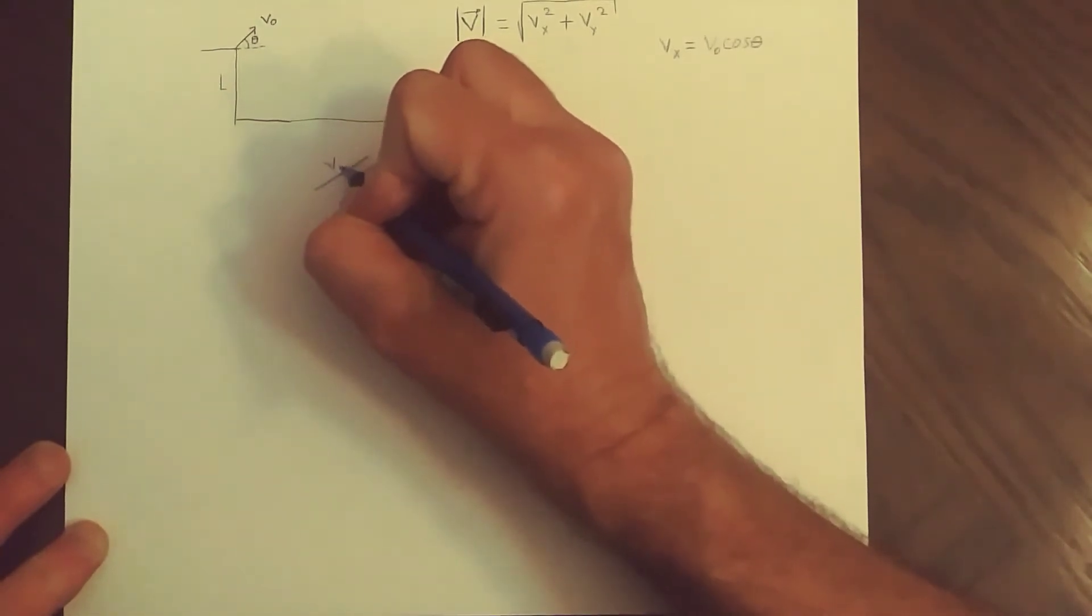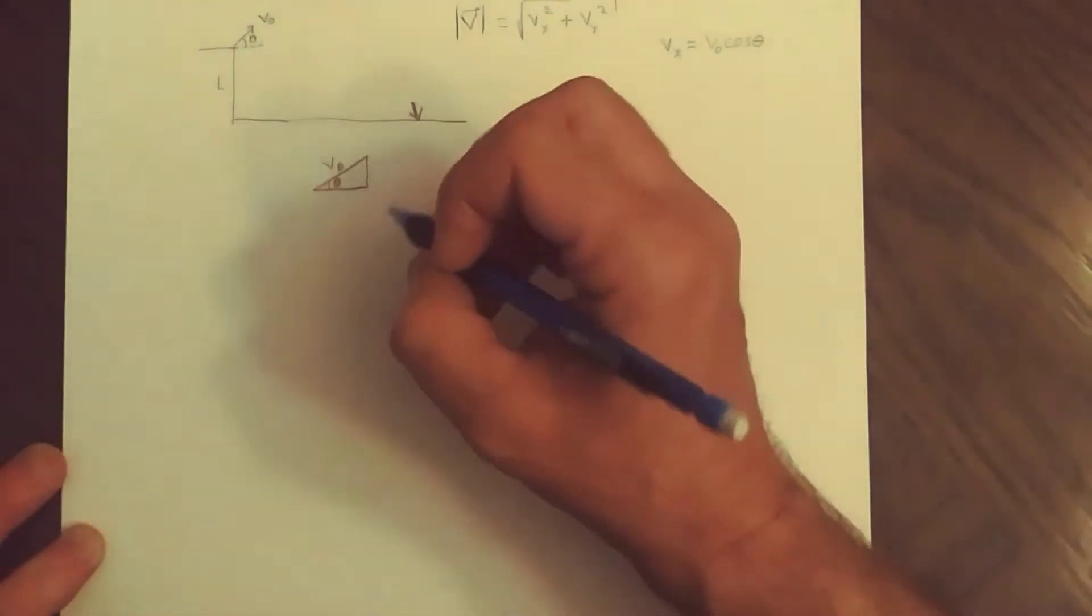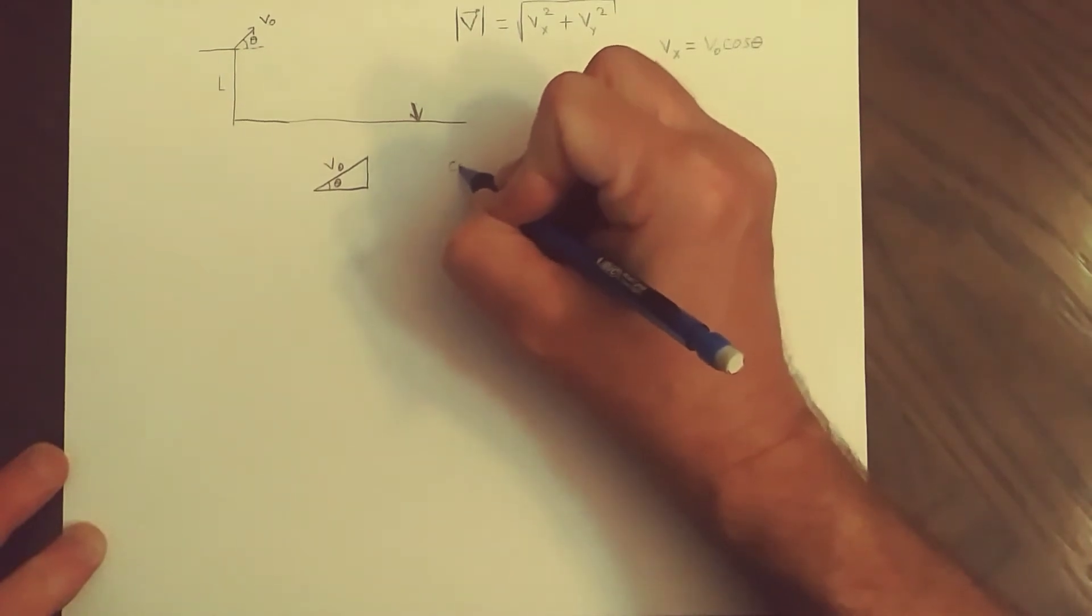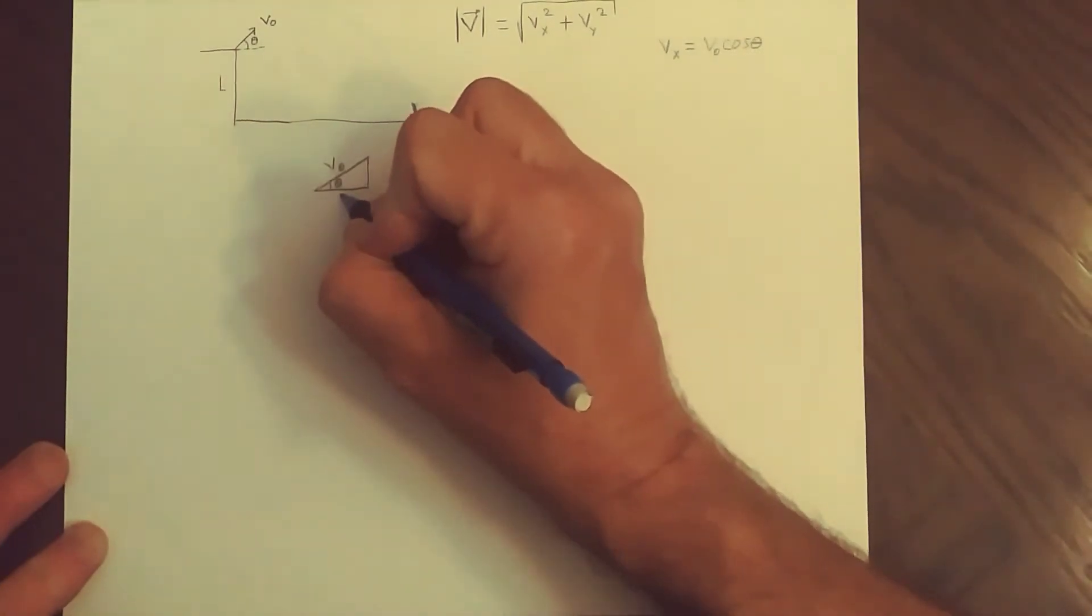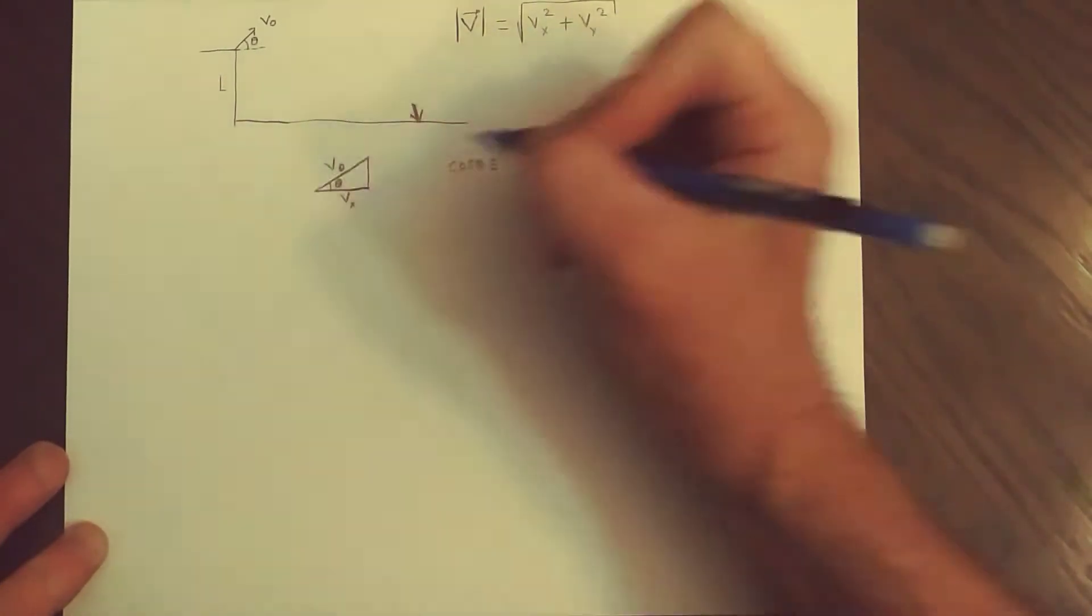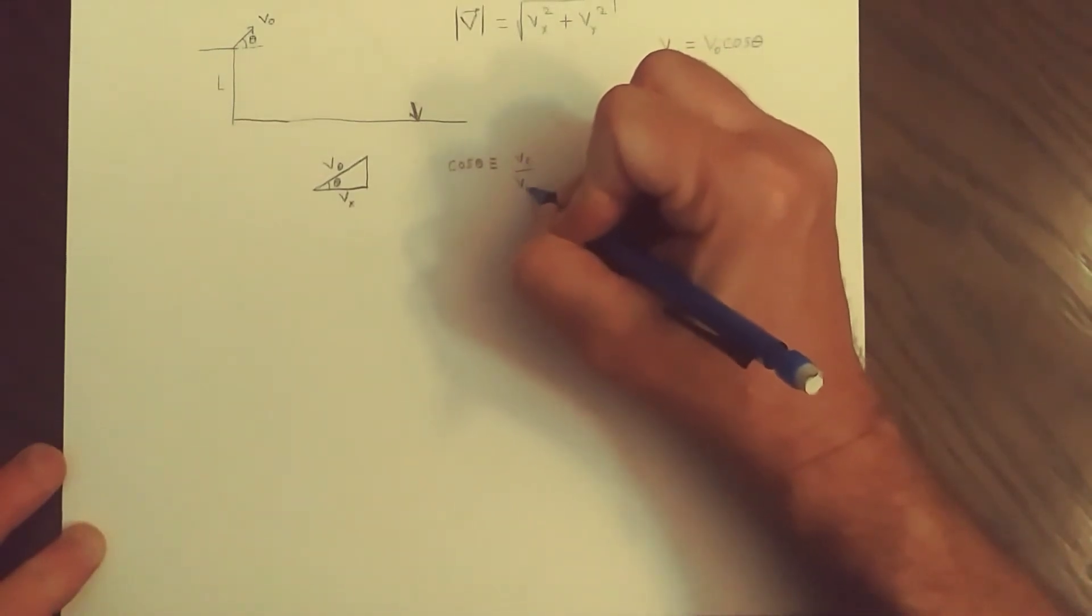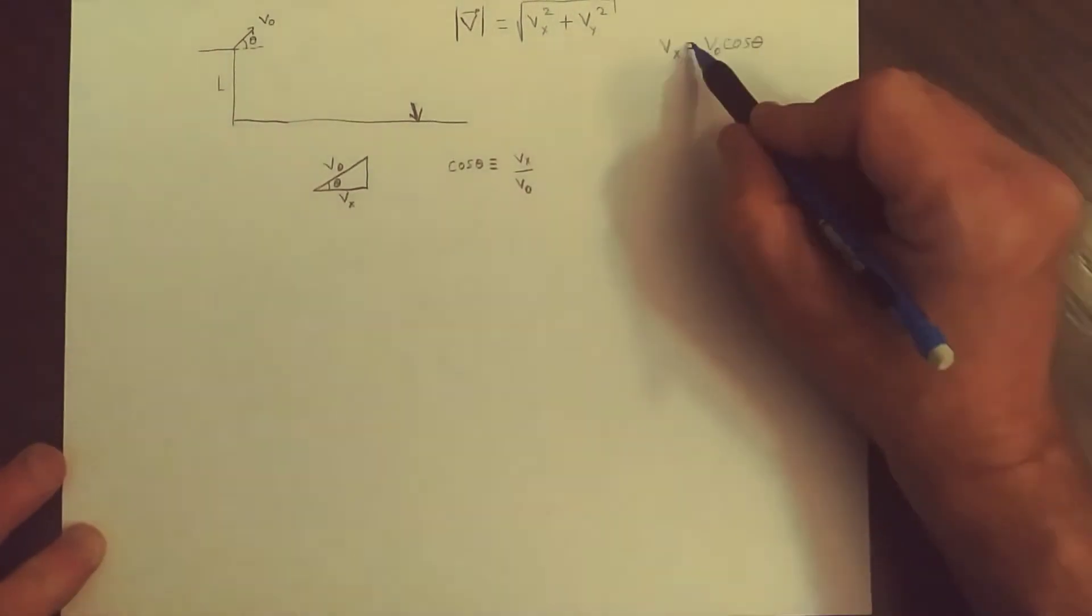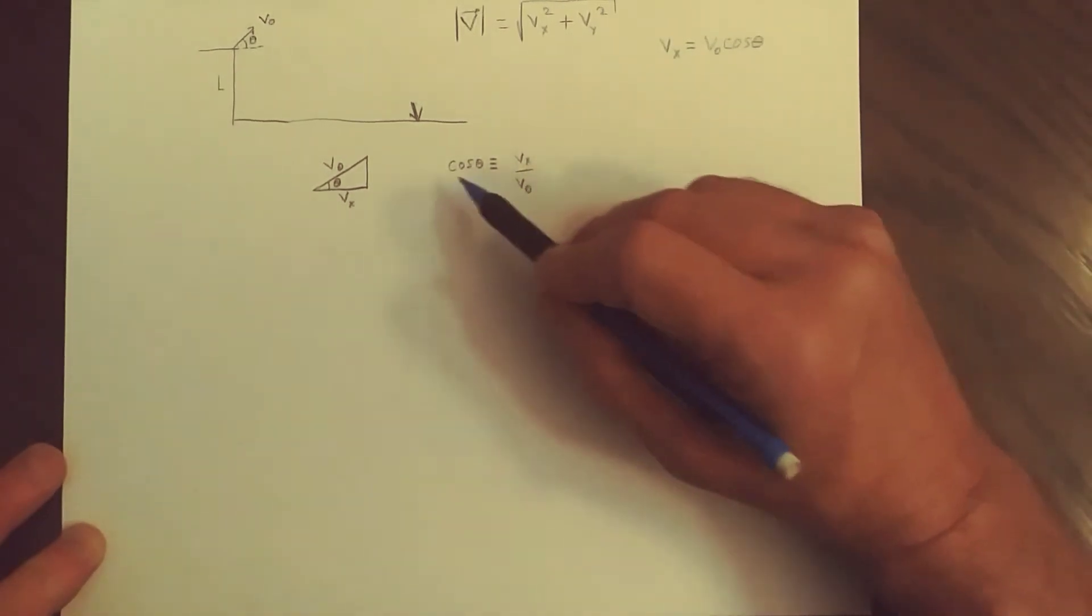One way to think about this is that the hypotenuse is V naught and here's our right triangle with that angle theta. By the definition, the cosine of that angle is the adjacent side, which is the part we're looking for, the horizontal part over V naught.